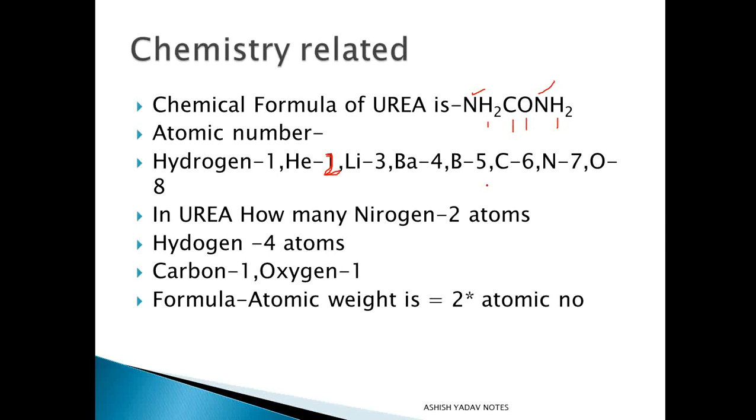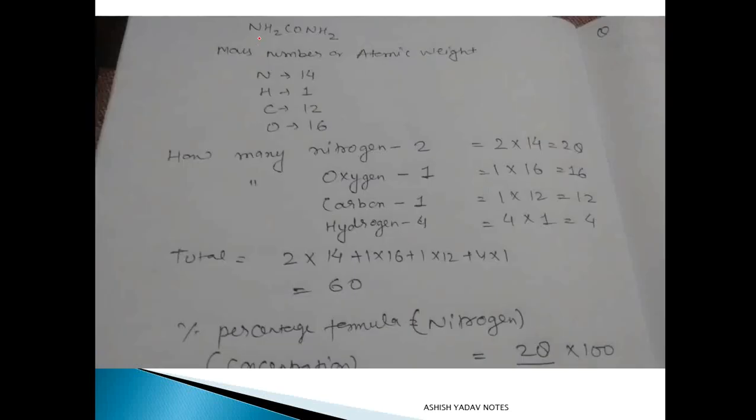So basically there is one concept: atomic weight is double of the atomic number. It's just basic chemistry. Now in the coming slide I will show you how to calculate that. Atomic weight is double of the atomic number.